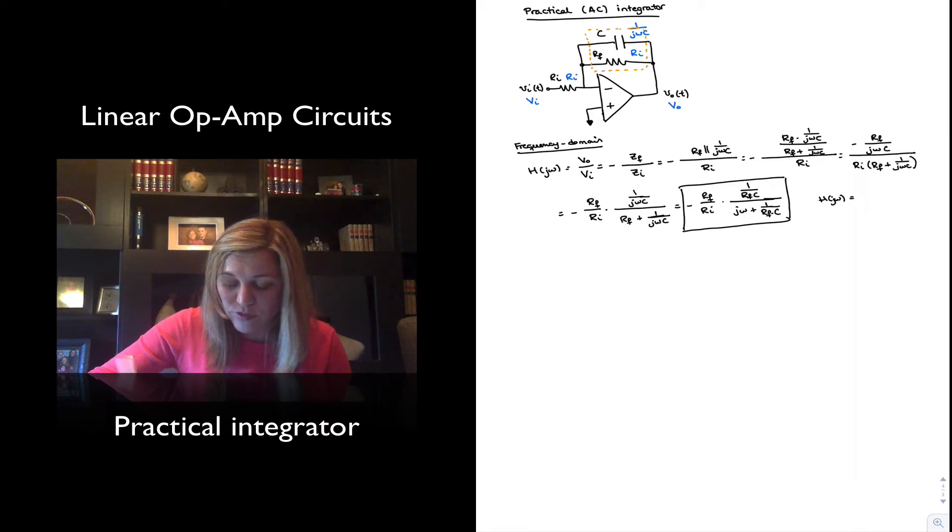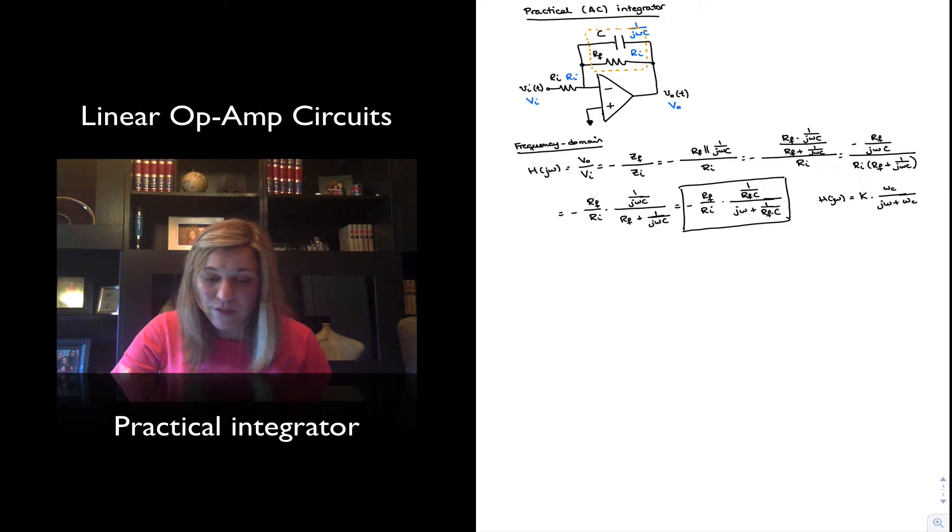We will have the transfer function for a first order low pass filter, it will be some gain term K times C divided by j omega plus j omega C. And that's exactly what we have. We have the response of a single pole low pass filter, where the gain or the proportionality constant is negative RF over Ri.